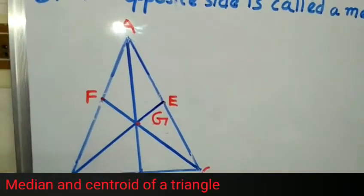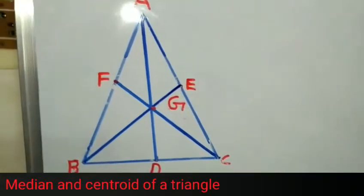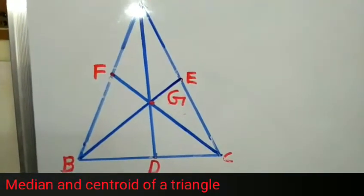AD, BE, CF are all three medians intersecting at G.